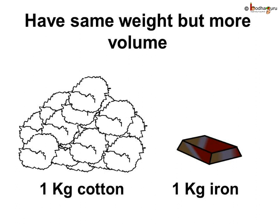But the volumes of two different substances can be different. For example, if we take a piece of iron that weighs one kilogram and a bunch of cotton that also weighs one kilogram, we will find that their volumes are different. Cotton occupies more space than iron. The amount of matter in a body is called its mass.